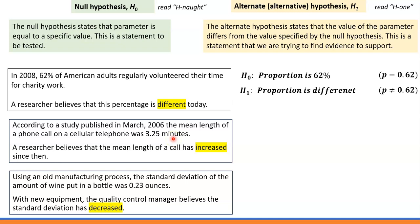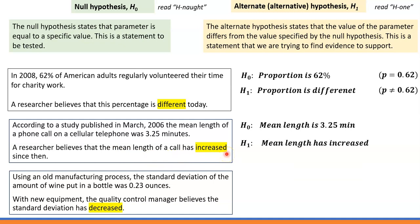That's the null hypothesis H0: mean length is 3.25 minutes. What is the alternative hypothesis? That's the second sentence, where it says the mean length has increased. That's the key word: mean length has increased. How can we describe both using short mathematical notation?